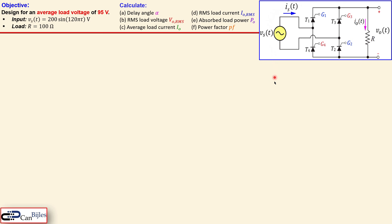The circuit is shown here for our full wave rectifier in the bridge configuration. You can see the four thyristors: T1, T2, T3, and T4. They all also have their gate connections. We will discuss this in more detail shortly.